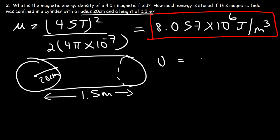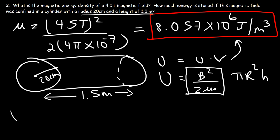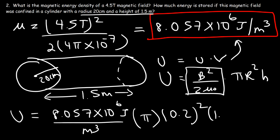The potential energy is going to be the energy density times the volume. The energy density is B squared over 2 mu zero, and the volume of this cylinder is pi r squared times the height. So the total potential energy is 8.057 times 10 to the 6 joules per cubic meter, multiplied by pi times (0.20 meters)² times 1.5 meters.